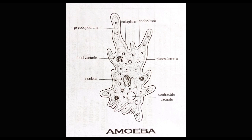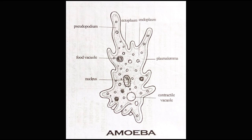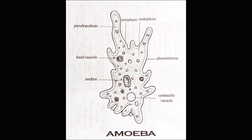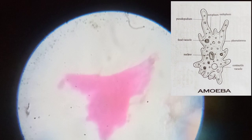First, Amoeba. Phylum Protozoa, Class Rhizopoda, Subclass Sarcodina. It is a unicellular organism. It is covered with plasma lemma, and it contains blunt pseudopodia which help in locomotion and ingestion.